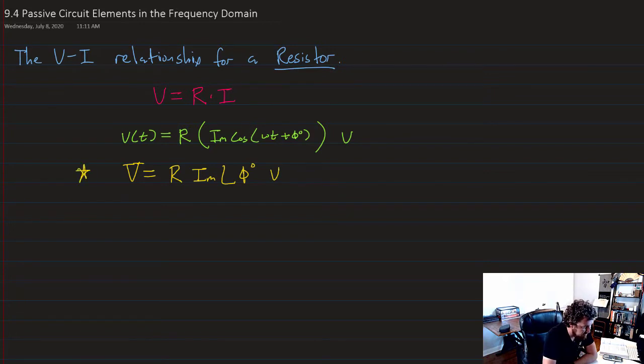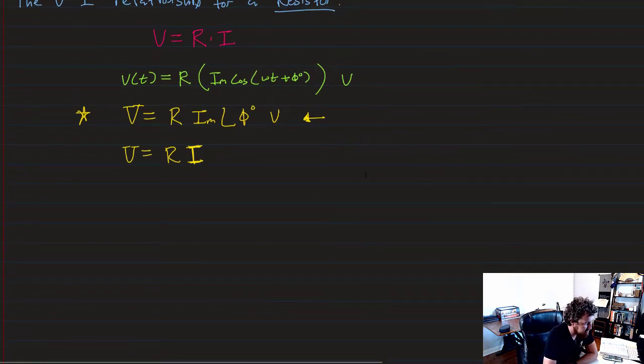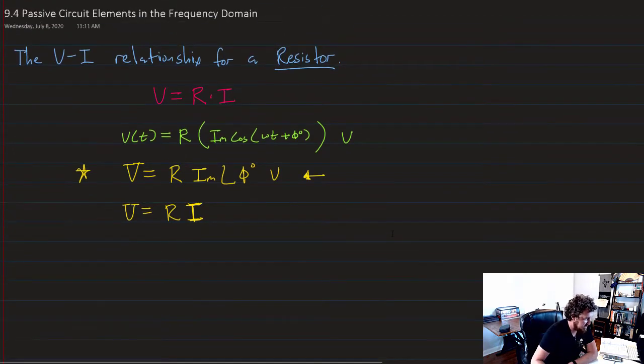So phasor V is now equal to R times I_m at the angle of phi degrees. And there we go. That's given in volts. And that's all there is to it. The resistor is really simple. You might sometimes see a shorthand where it just says V is equal to R times the phasor I in volts, which is basically just a restating of Ohm's law in phasor form. When I'm working with the circuit elements, I like to use this form. It doesn't really matter so much in resistors, but as we see in inductors and capacitors, this can be mathematically a little bit easier to work with when we start dealing with the phase shifts. Ohm's law is the same for DC circuits as they are for AC circuits.